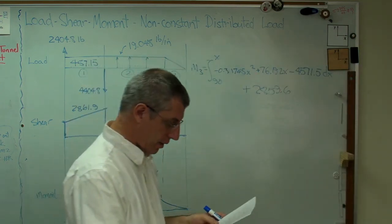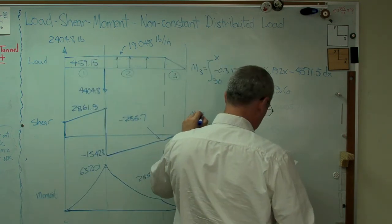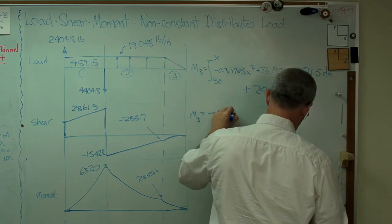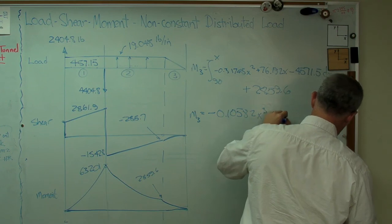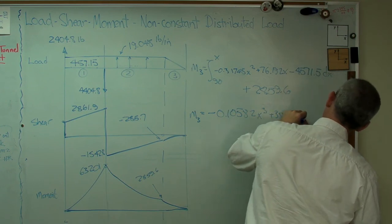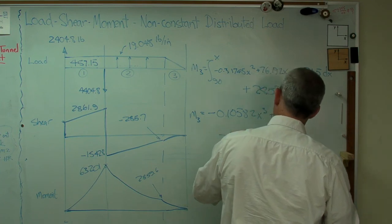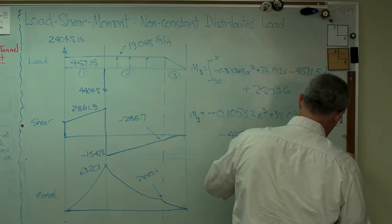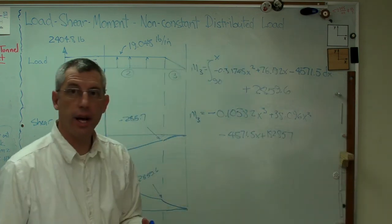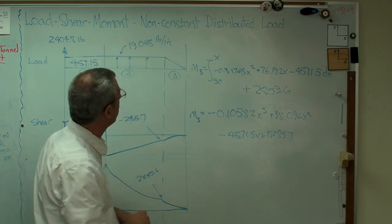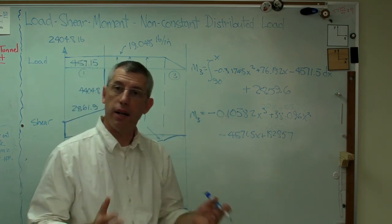I'm going to have to grind this out just for reasons of good form. So bear with me here. This turns out to be minus 0.10582x cubed plus 38.096x squared minus 4571.5x plus 182857. So there you have it. That's the expression for that little curved part there. Remember we went from first order, second order, third order. There's our third order curve. Now we're done.